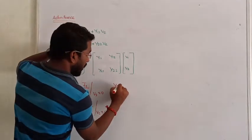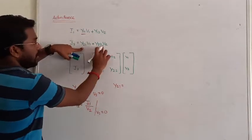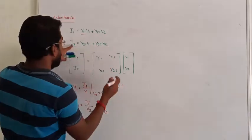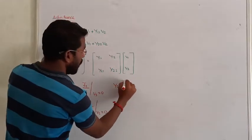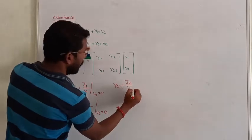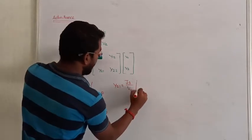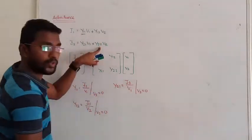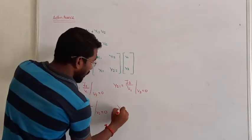When calculating y21, you have to make v2 equal to 0. y21 = i2/v1 when the value of v2 is 0.